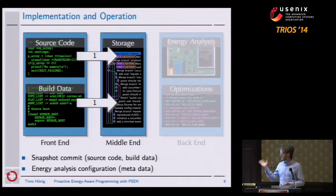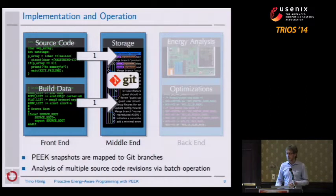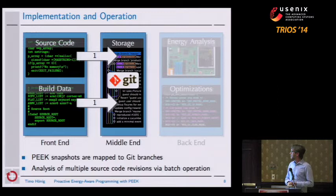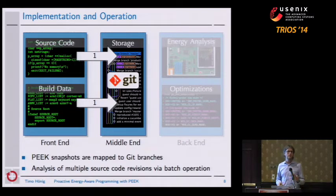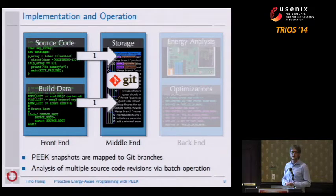For a single analyzer run, we first submit the data to be analyzed by the back-end as a snapshot to the middle-end. This contains the source code, build data, and the energy analyzer configuration. For that, we use Git — we have a mapping from a snapshot in our framework to a Git branch. This is very convenient if you have different algorithms implementing the same functionality: you can submit several branches containing different snapshots and tell the back-end to analyze all of them, and we can tell you which implementation was the most energy efficient one.